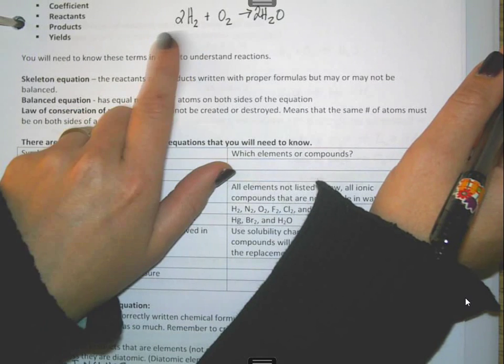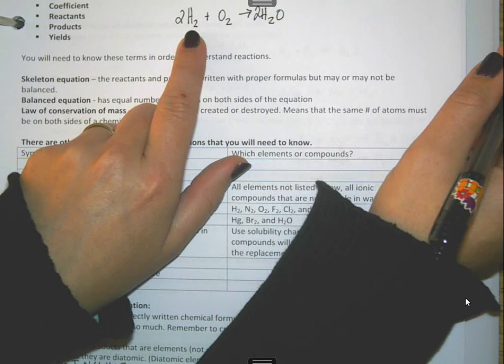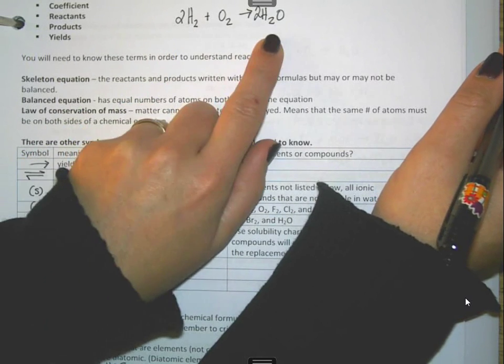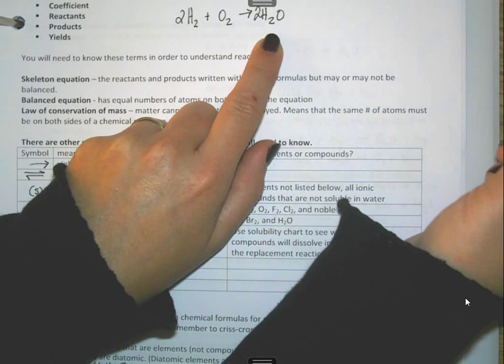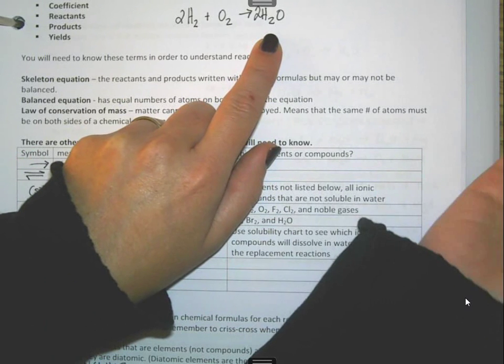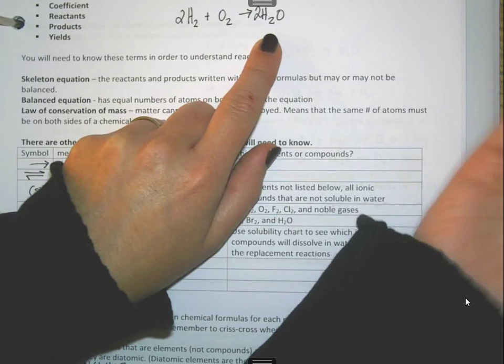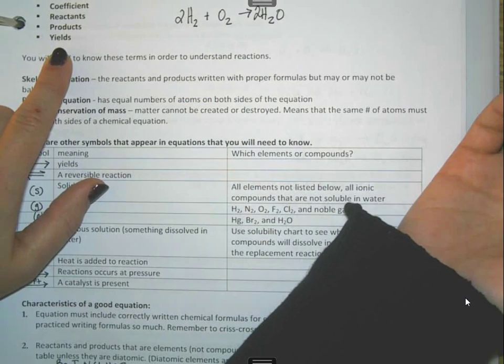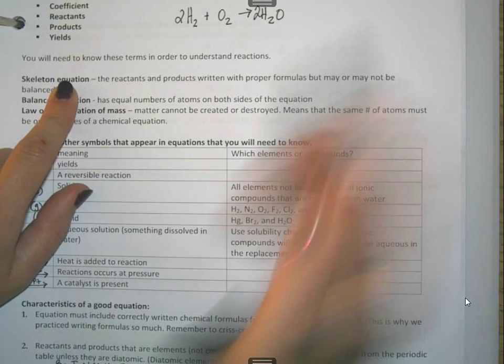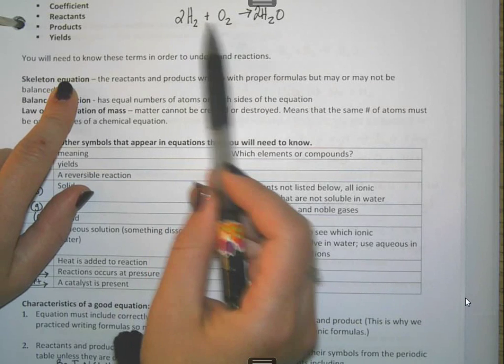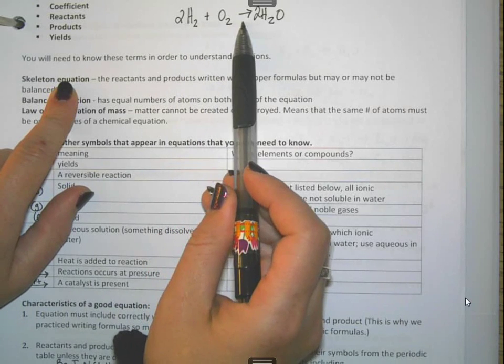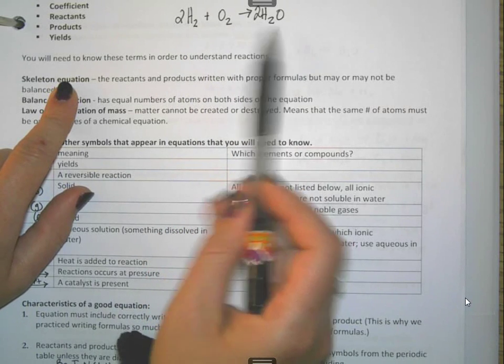Reactants are the things that go into the reaction. They're usually over here on the left-hand side. The products are the things that come out. They're often on the right. They're definitely where the arrow is pointing. The arrow always points towards your products. Yields is how we're going to read the arrow. We're going to say this as 2H2 plus O2 yields 2H2O.